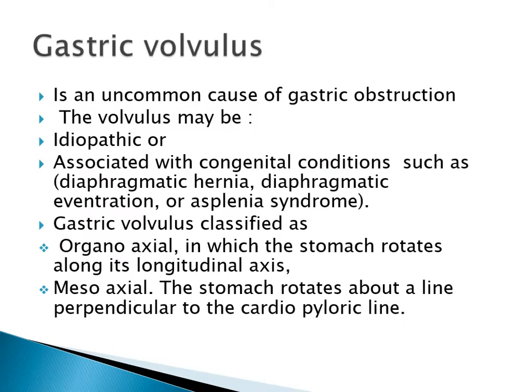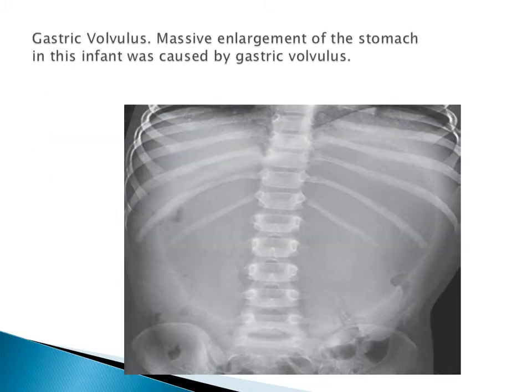Gastric volvulus is an uncommon cause of gastric obstruction. The volvulus may be idiopathic or associated with congenital conditions such as diaphragmatic hernia, diaphragmatic eventration, or asplenia syndrome. Gastric volvulus is classified as organoaxial - the stomach rotates along its longitudinal axis - or mesoaxial, where the stomach rotates about a line perpendicular to the cardiopyloric line. This case shows massive enlargement of the stomach caused by gastric volvulus.